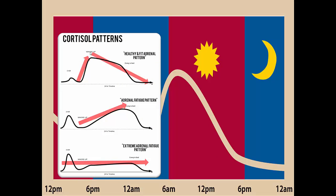We have our typical pattern — high in the morning, then dropping. We have our fatigue pattern, which is somewhere around stage two where we're in between. And then we have stage three, which is going to be relatively a flat line. The only thing we're missing here is stage one, and we're going to break that down one by one and show you some real patient labs of how that actually looks.